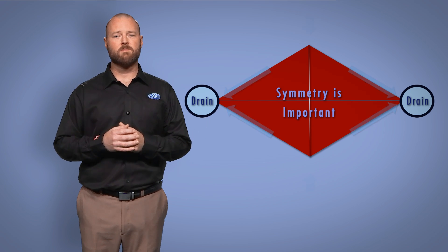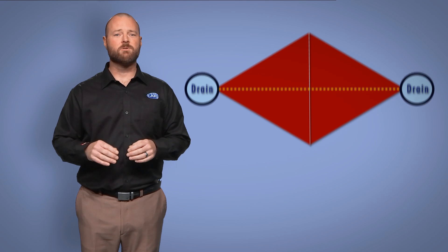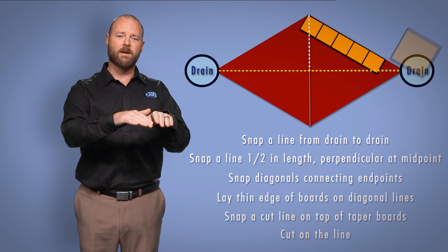Ideally you want your crickets to be symmetrical so that the board heights meet. Once you've chalked your lines for your diamond, you'll lay the narrow edge of the boards on that diagonal line.